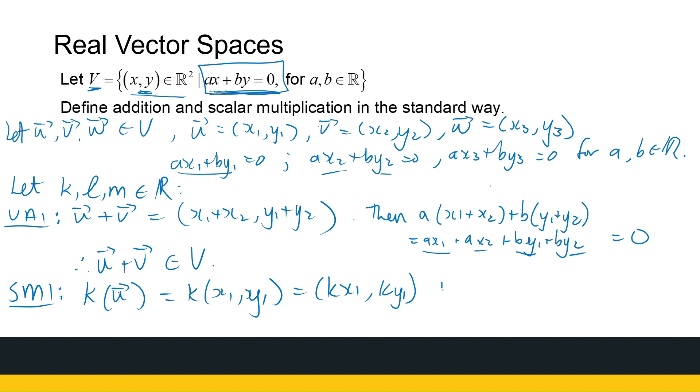Now is that again in the set V? Well, we've got to look. We've got to see what happens if I look at a times kx1 plus b times ky1. What will that give me? Well, it'll give me akx1 plus bky1. But I know that's the same as, take k out and I've got ax1 plus by1, which is just k times 0, which is 0. So we've got it. That one is again. So ku is going to be in my set.